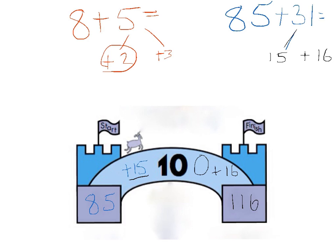So that's bridging through 10. That's bridging through 100. And they're both strategies that at various times could be very useful.